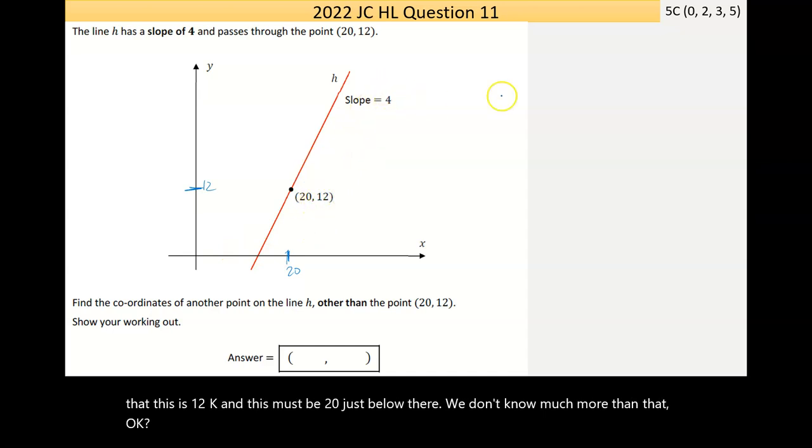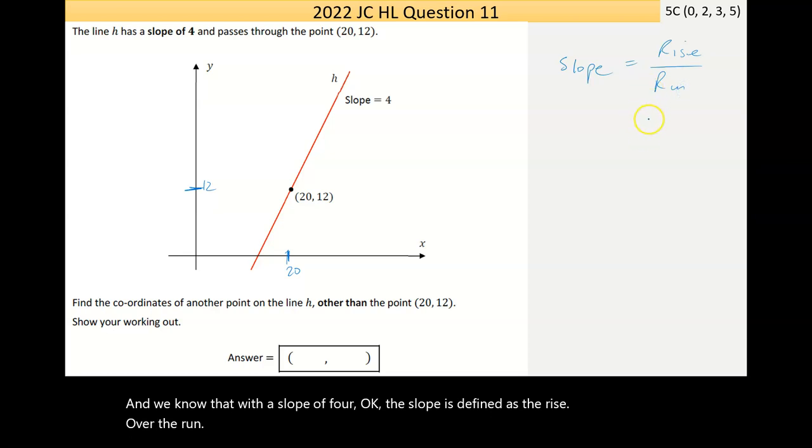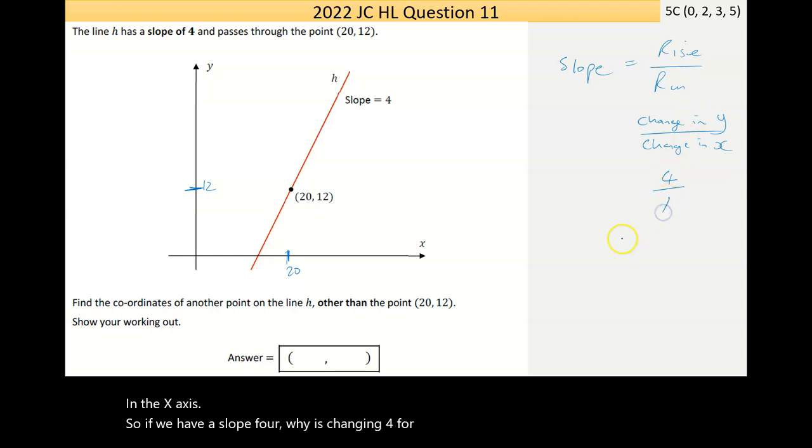And we know that with a slope of 4, the slope is defined as the rise over the run. So in essence, that's the change in the y-axis over the change in the x-axis. So if we have a slope of 4, y is changing 4 for every one x changes, and that's why it's so steep.